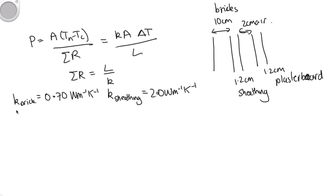k for air is equal to 0.0234 watts per meter per kelvin. And finally, we've got plasterboard. So k for plasterboard is equal to 0.174 watts per meter per kelvin.